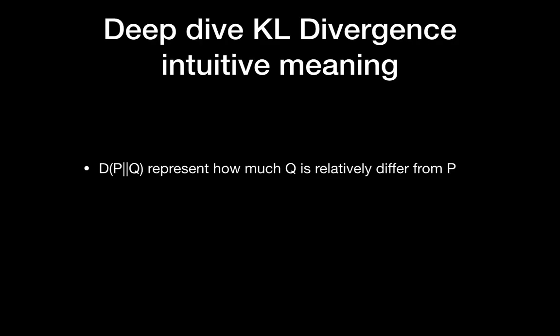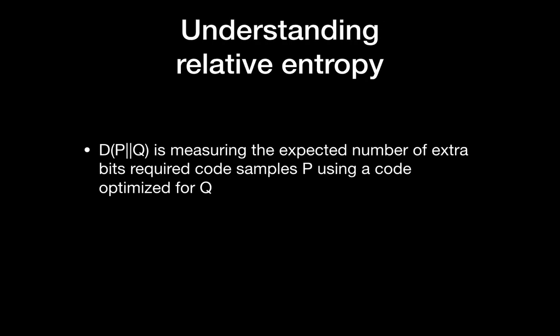Okay, that was the basics of KL divergence, and I know you want to know more, so let's go deeper. KL divergence from the true labels to the predictions represents how much the model prediction relatively differs from the true label distribution. In other words, the KL divergence is the relative entropy of the true label with respect to the prediction. We know entropy is the number of bits to store information, so we can say the KL divergence — also known as relative entropy — is the expected number of extra bits required to encode samples of the true labels using a code optimized for the prediction.